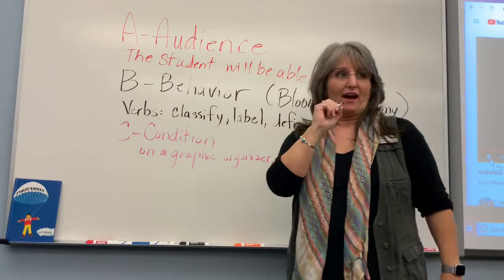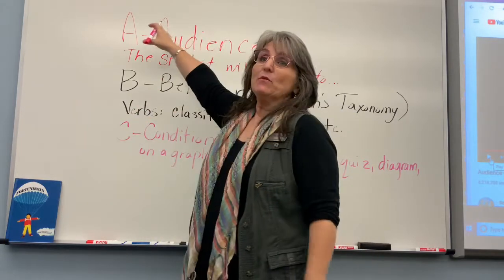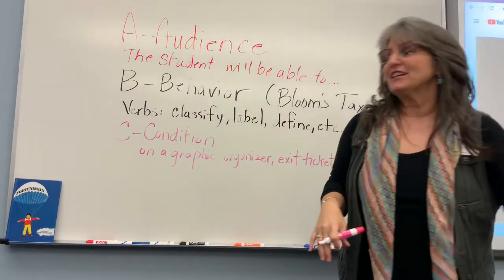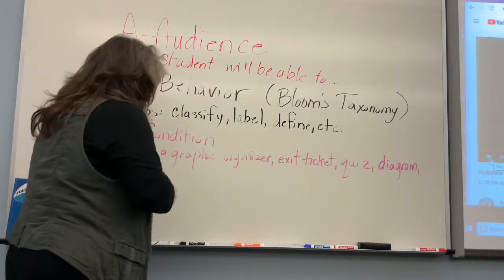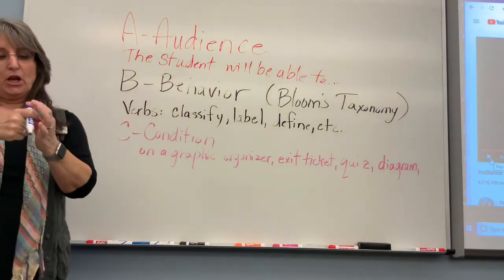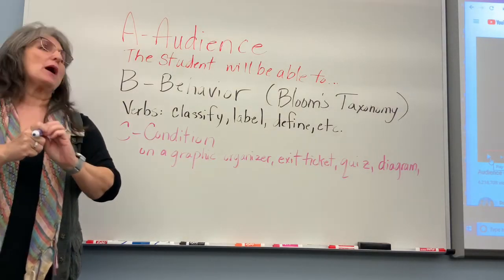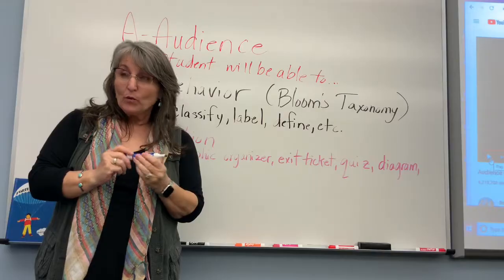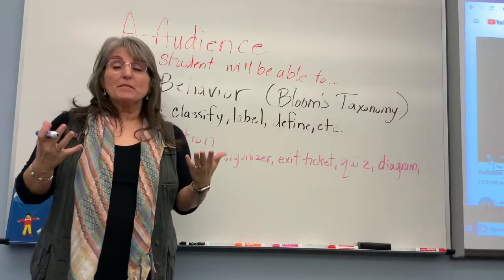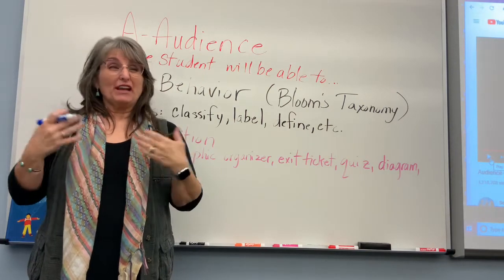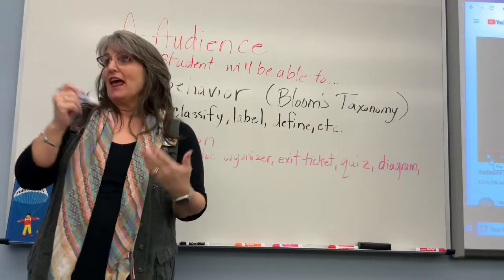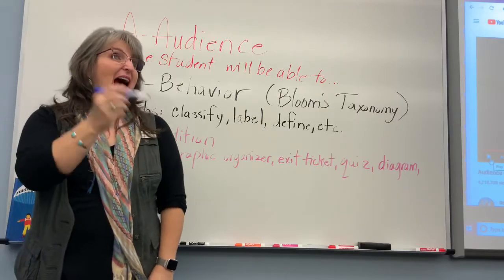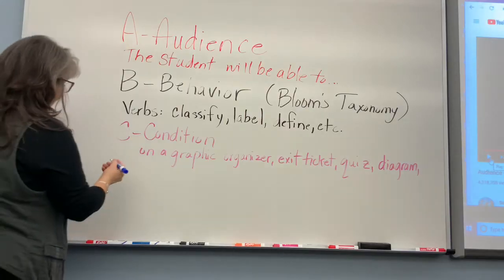So we have our A which is audience, our B which is behavior, and our C which is condition. There's a bit of research out there that says students find it extra punitive if you use red when grading their papers. If you wanted to use blue or purple that might work out a little better — I like purple and blue so I might just use those.